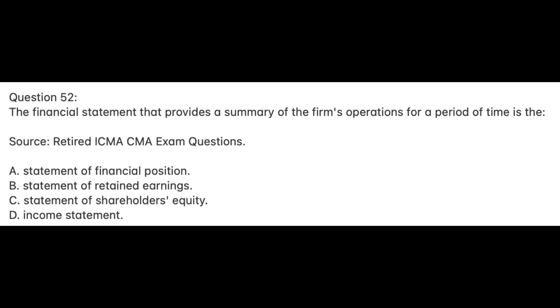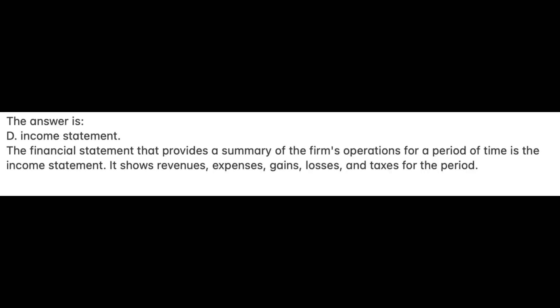Question 52. The financial statement that provides a summary of the firm's operations for a period of time is: A. Statement of Financial Position; B. Statement of Retained Earnings; C. Statement of Shareholders' Equity; D. Income Statement. The answer is D: Income Statement. The financial statement that provides a summary of the firm's operations for a period of time is the income statement. It shows revenues, expenses, gains, losses, and taxes for the period.